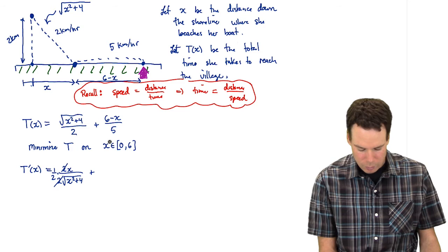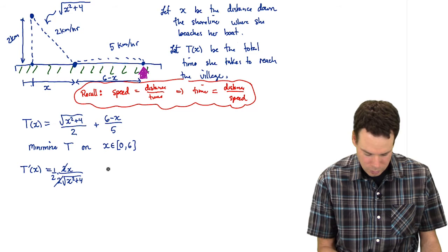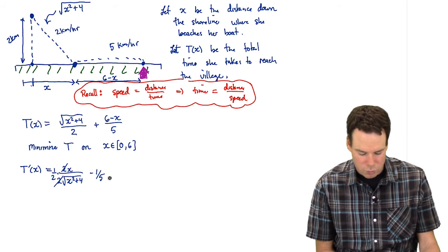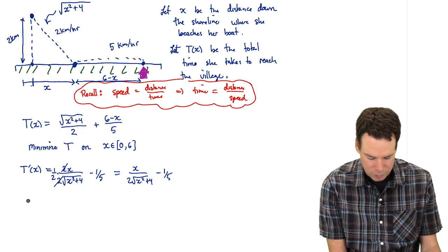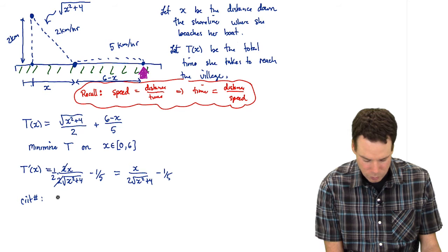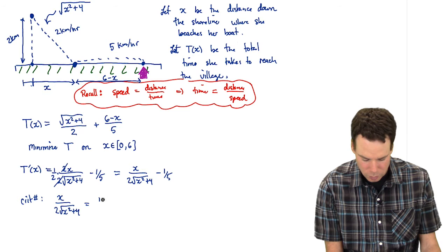What about the next part? Well that's just going to be negative 1 fifth. So I'll just write it in here. That's negative 1 fifth. So that's our derivative. Let's clean it up just a little bit. x over 2 root x squared plus 4 minus 1 fifth. We want to set that equal to 0. So what's our critical number? Well this means we want x over 2 root x squared plus 4 equal to 1 fifth.